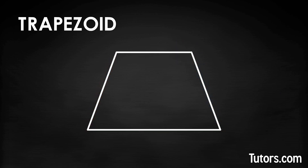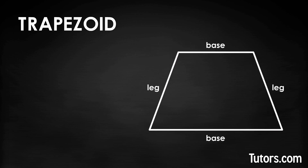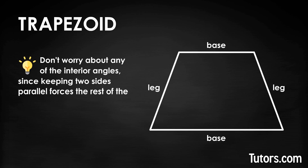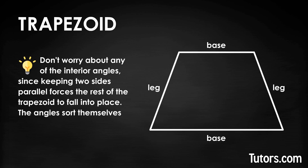The horizontal parts are the bases. The last two pieces you drew or put down at the left and right ends are called the trapezoid's legs. Notice we did not worry about any of the interior angles, since keeping two sides parallel forces the rest of the trapezoid to fall into place. The angles sort themselves out and add to 360 degrees.